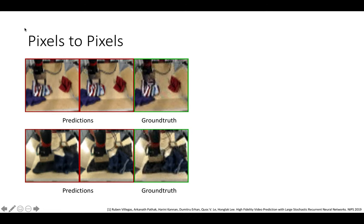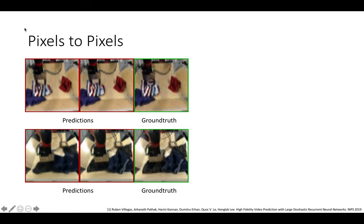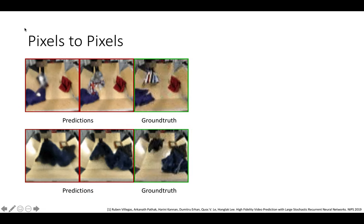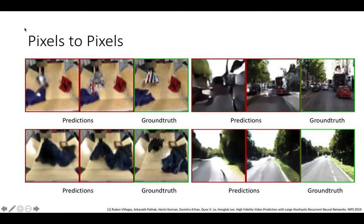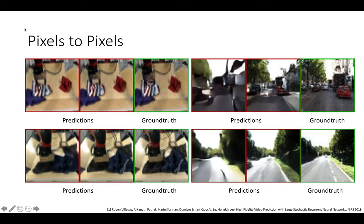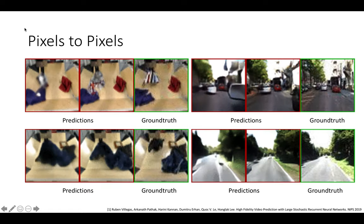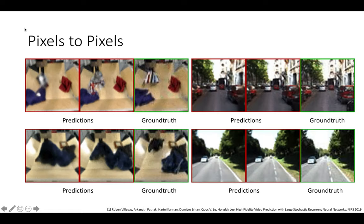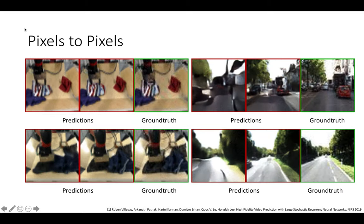Here are some examples of visual prediction in pixel space. The green box represents the input image, and the red boxes represent the output images. As it moves towards the future, the output pixels become more and more blurry. Prediction in the pixel space is really difficult. The reason is that the pixel space is very large to predict, and as we try to move forward in time, the uncertainty becomes larger and larger.